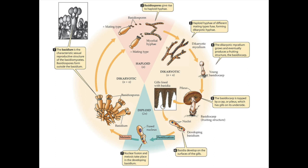The basidia undergo fertilization to produce diploid cells. The basidia then undergo a process called karyogamy, where each basidium produces a diploid nucleus through nuclear fusion.